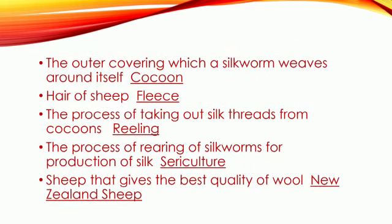Children, here are the answers. The outer covering which a silkworm weaves around itself is called the cocoon. The hairs of sheep is called fleece. The process of taking out silk threads from the cocoon is called reeling. The process of rearing of silkworms for the production of silk is called sericulture. The sheep that gives the best quality of wool is the sheep of New Zealand.